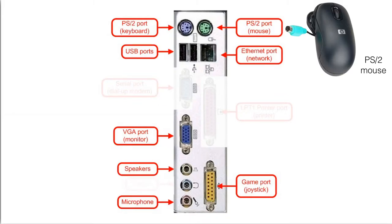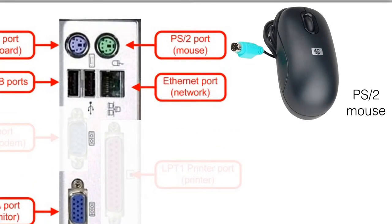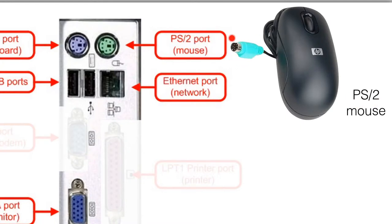Let us look at the first port, the mouse port first. So here we have the PS2 port. This green port is used to connect to a mouse with a PS2 connector. Usually at the back of the computer or the system unit there is a logo showing this is a mouse port. The PS2 port or the PS2 mouse is fading out because they are usually replaced by the USB port or the USB mouse.